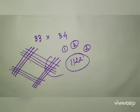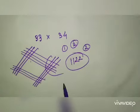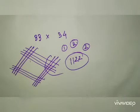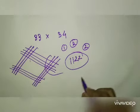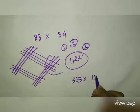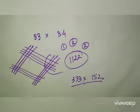So today I will show you two digits numbers. Next, I will show you three digits numbers. 33 into 152. We will show you three digits.